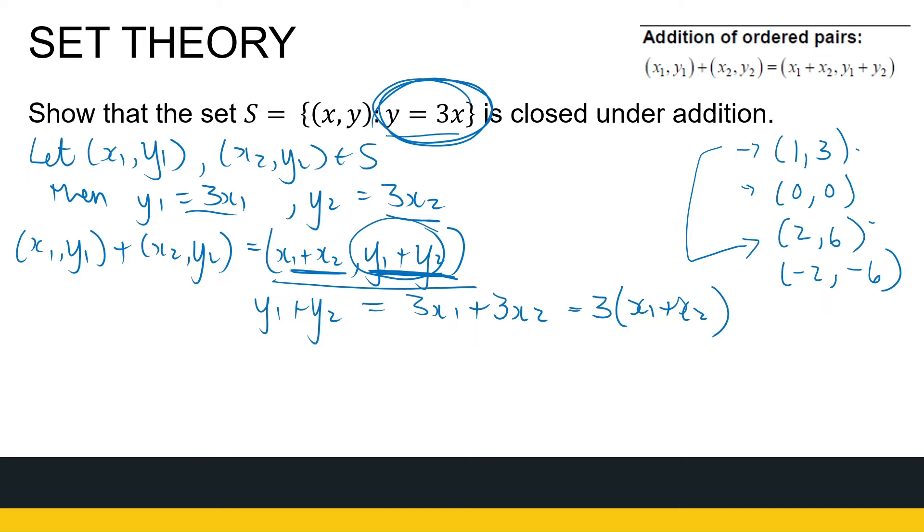I'm not done yet. I want to show that this one is three times the first one. Well, if I take out a three as a common factor, I've got x1 plus x2. Now I've shown, what have I shown? I've shown that (x1, y1) plus (x2, y2) is an element of S. Now I can conclude that S is closed under addition.